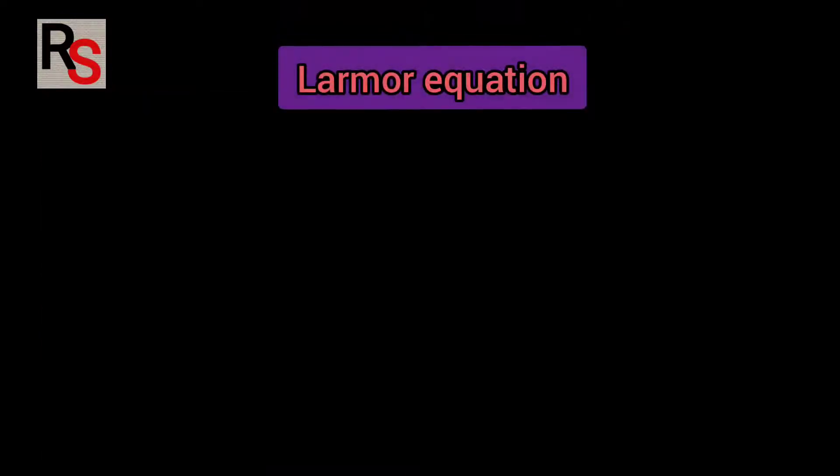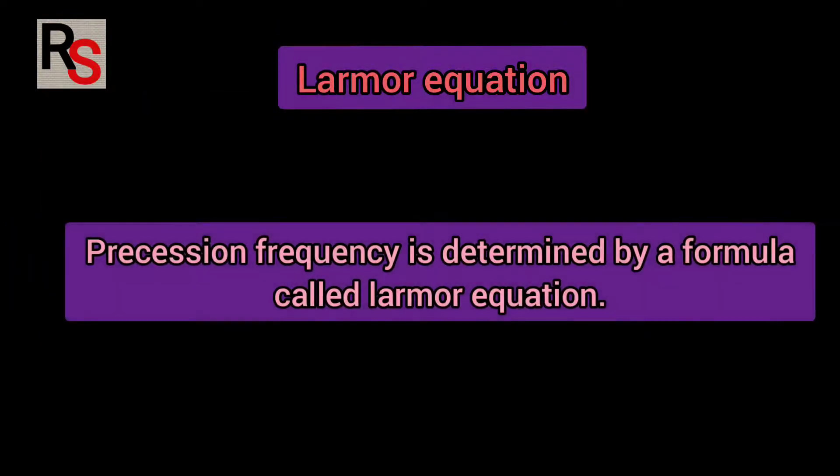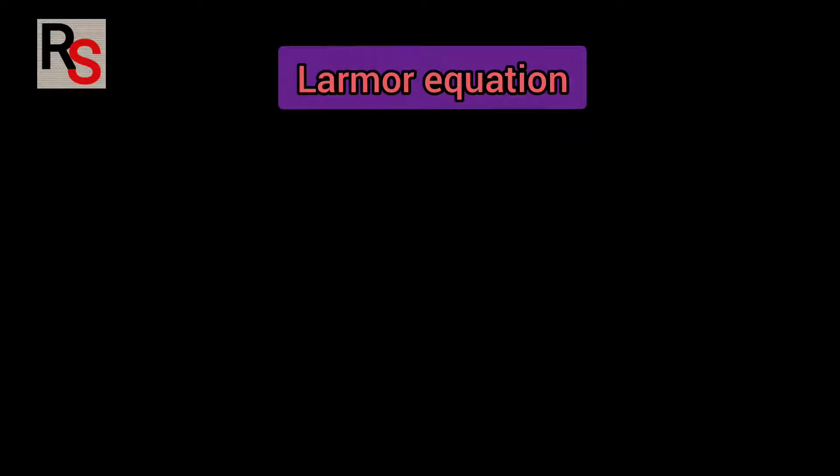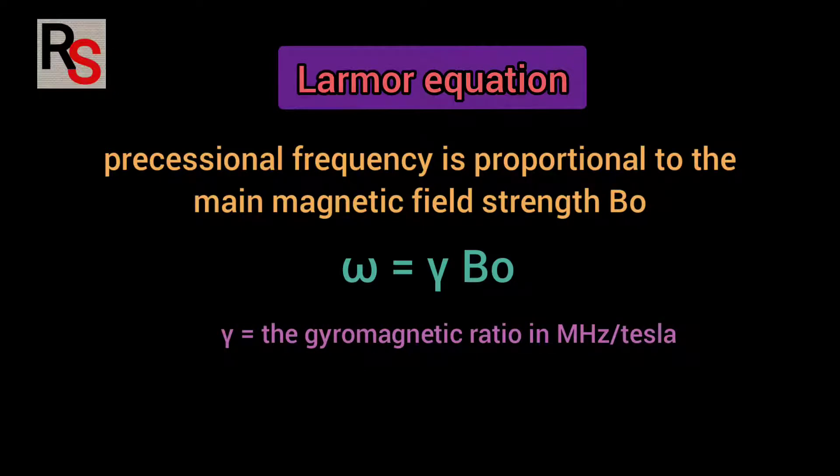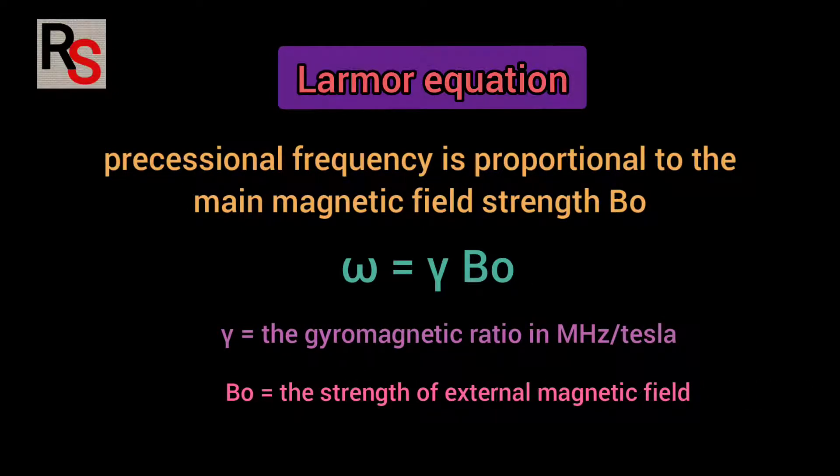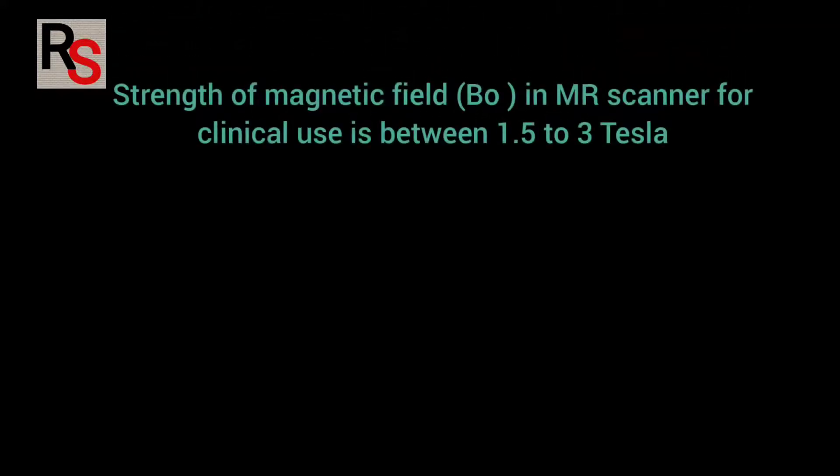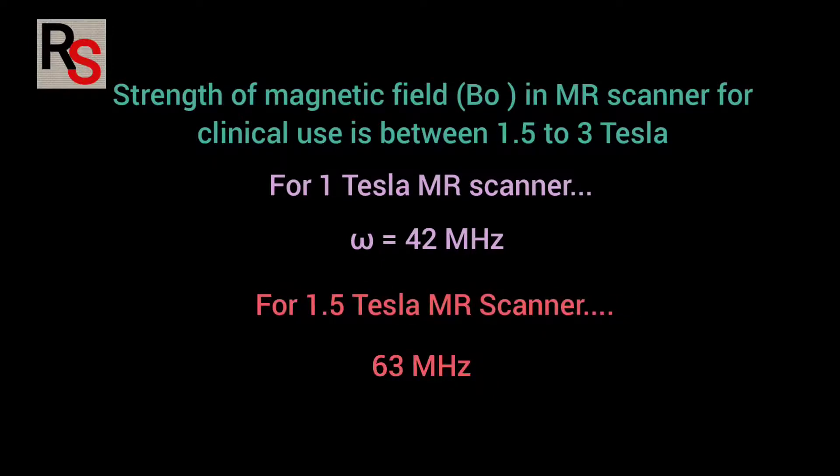The precession frequency omega is determined by a formula called Larmor equation which states that precession frequency is equal to gamma multiplied by B0 where gamma is gyromagnetic constant and B0 is the strength of external magnetic field. The majority of MR systems in clinical use are between 1.5 to 3 Tesla. So for field strength of 1 Tesla the precession frequency of hydrogen is 42 megahertz or 42 million cycles per second and 63 megahertz for 1.5 Tesla scanner.